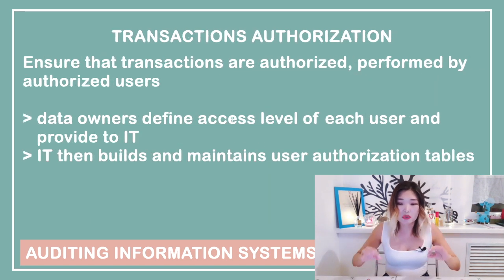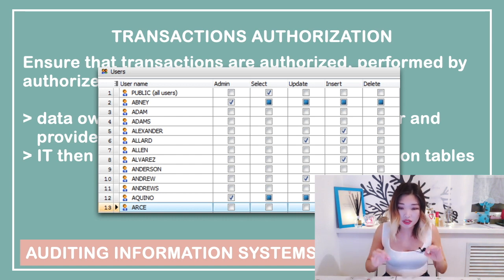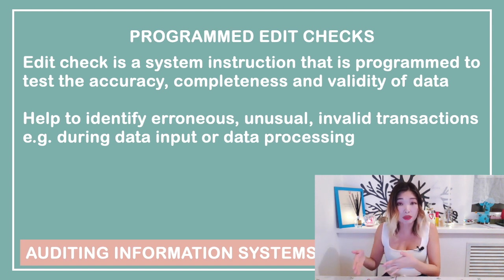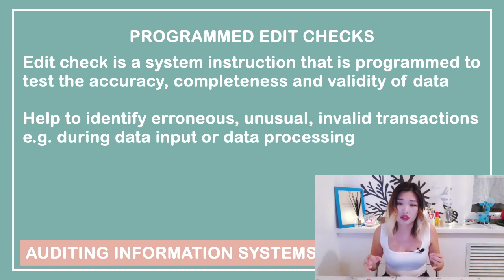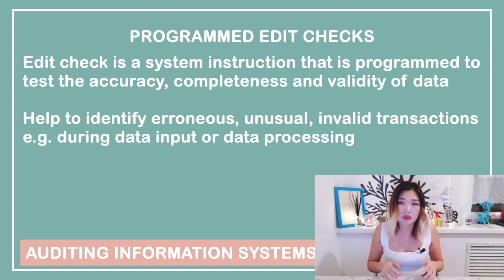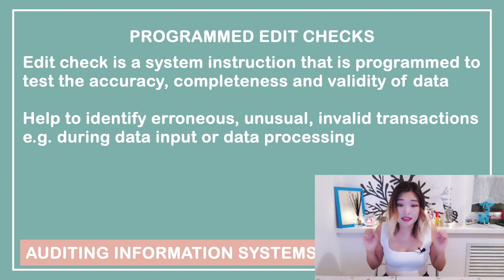Such tables may have a deeper granularity level specifying privileges at the system level, transaction level, or even the field level. Now let's look at programmed edit checks. Edit checks are programmed system controls to help ensure that the data entered into the system are accurate and complete. There are many different types, such as sequence check, limit check, range check, validity check, etc. For simplicity, let's take an example: if you sign up to a website and enter an email without an at-sign, the website will tell you your input is invalid. This is a simple example of an edit check.